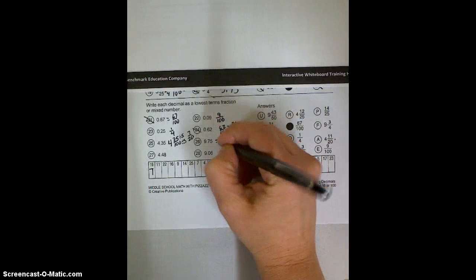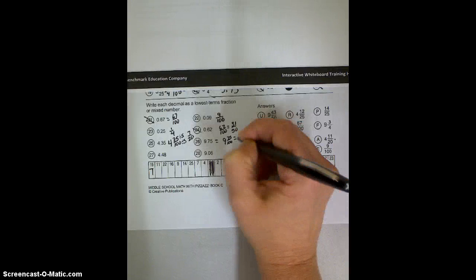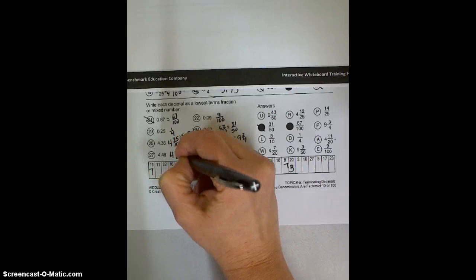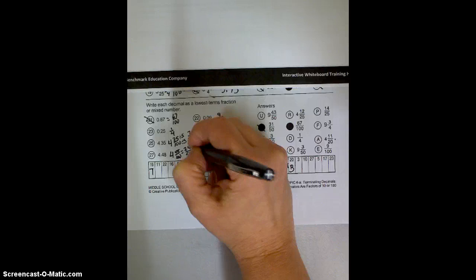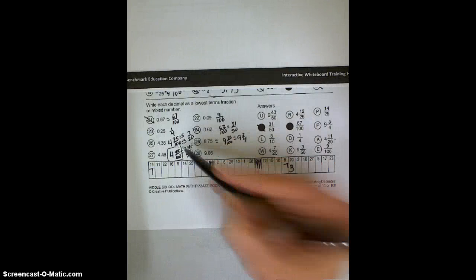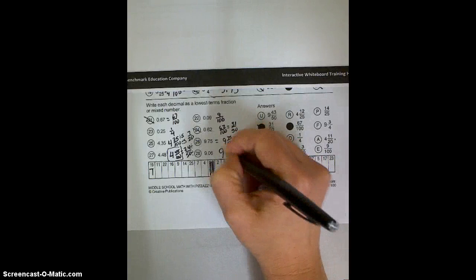This one, we'll change to 9 and 75 hundredths, which is the same as 9 and 3 fourths. Here we've got 4 and 48 hundredths, which needs to be reduced. We can divide them both by 2 to start with. We get 24 fiftieths, and I bet we could reduce it again. Really, this is not a bad answer for what we're doing in fifth grade. But if you're looking for it over here, you need to keep reducing. And this one would be 9 and 6 hundredths, because it is in the hundredths place.